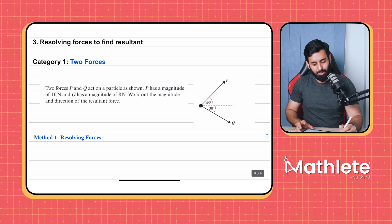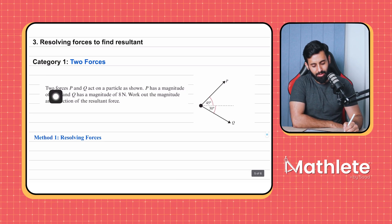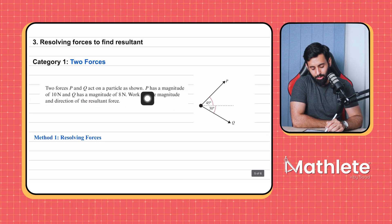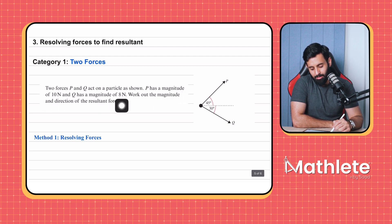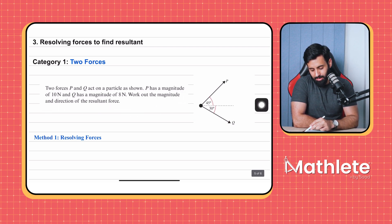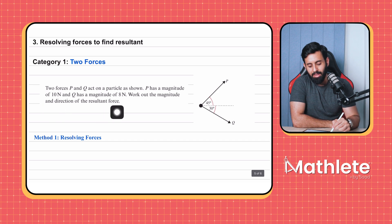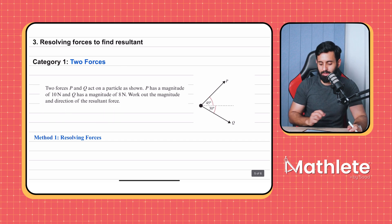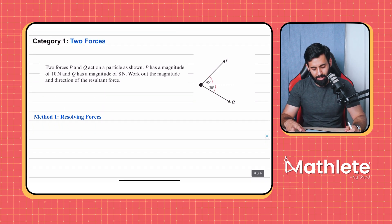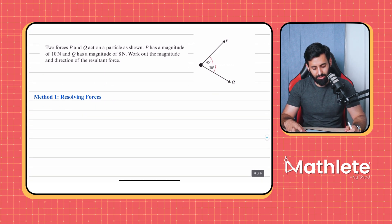Let's read the question first. Two forces P and Q act on a particle as shown. P has a magnitude of 10 newtons and Q has a magnitude of 8 newtons — this arrow represents the 10 newton force and this arrow represents the 8 newton force. Work out the magnitude and the direction of the resultant force.